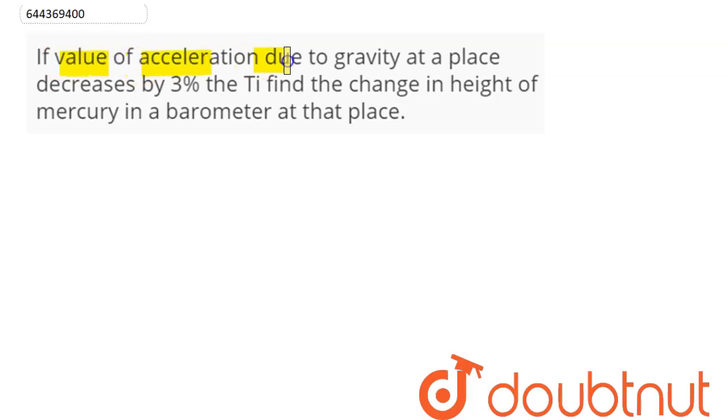Question is: if value of acceleration due to gravity at a place decreases by 3%, then find the change in height of mercury in barometer at that place.